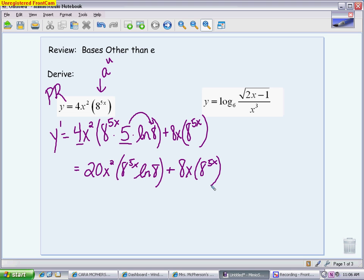When you're taking the derivative of a logarithmic function, the first thing you want to think about is, can I expand it to make it easier? And this is one you definitely can expand a couple different ways. You can write it as 1 half the log base 6 of 2x minus 1, and then minus 3 log base 6 of x. You turn it into two simpler pieces.